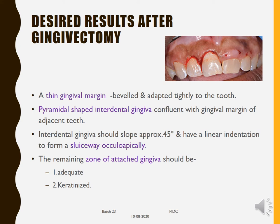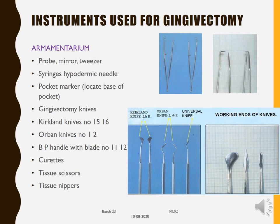After gingivectomy, certain desired results are needed. These include: a thin gingival margin that is beveled and adapted tightly to the tooth; a pyramidal-shaped interdental gingiva confluent with the gingival margin of adjacent teeth; interdental gingiva sloping at 45 degrees with a linear indentation forming a sluiceway occlusoapically; and an adequate zone of keratinized attached gingiva remaining. If you can achieve all these results, proceed with gingivectomy.